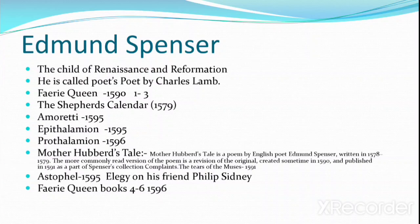Now we shall discuss some of his major works. It includes The Faerie Queene, which was published in 1590. A remarkable thing about The Faerie Queene is that only Books One, Two, and Three were published in 1590, and the remaining Books Four to Six were published in 1596. This is also very important as far as SET, NET, and other exams are concerned.